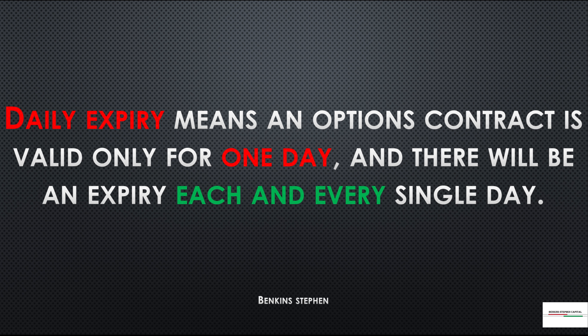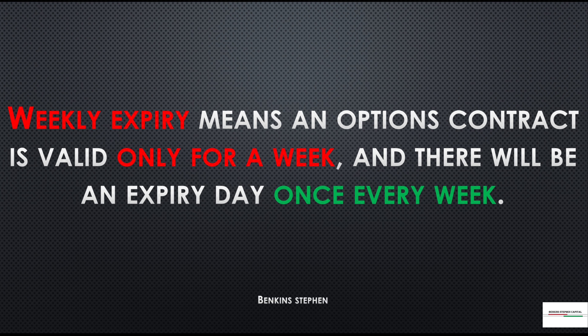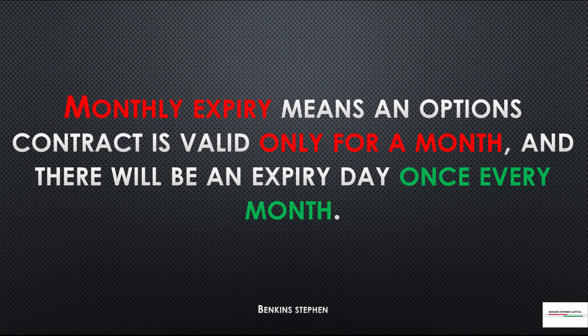Daily expiry means an options contract is valid only for one day, and there will be an expiry each and every single day. Weekly expiry means an options contract is valid only for a week, and there will be an expiry day once every week. Monthly expiry means an options contract is valid only for a month, and there will be an expiry day once every month.